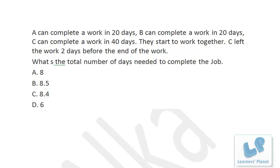If 1/8 of the work is done per day, the entire work would take 8 days. But they only need to complete 80% of the work together, since A and B handle the remaining 20%. So 80% of the work is done in 8 × 0.8 = 6.4 days. Adding the final 2 days gives 6.4 + 2 = 8.4 days total.